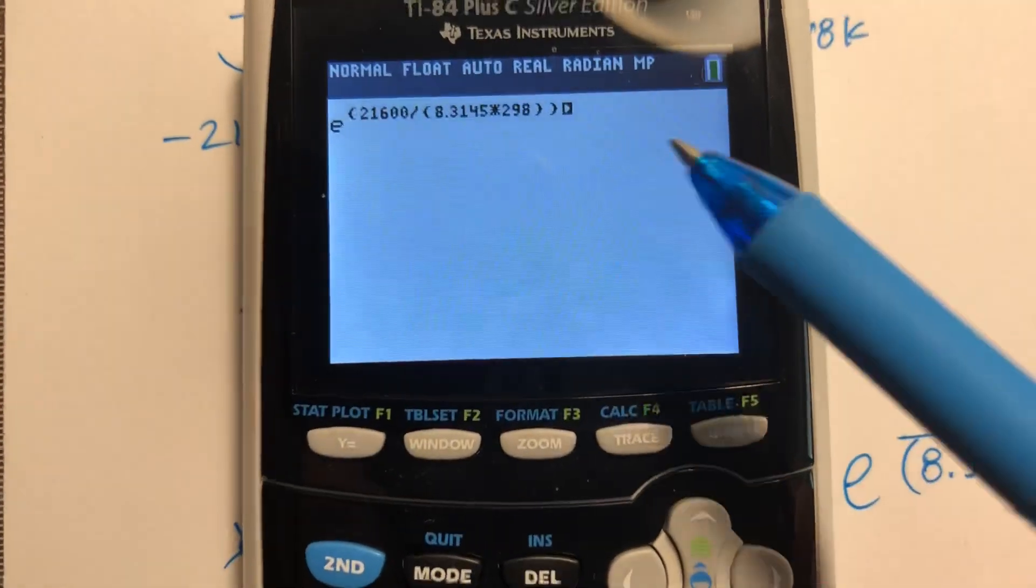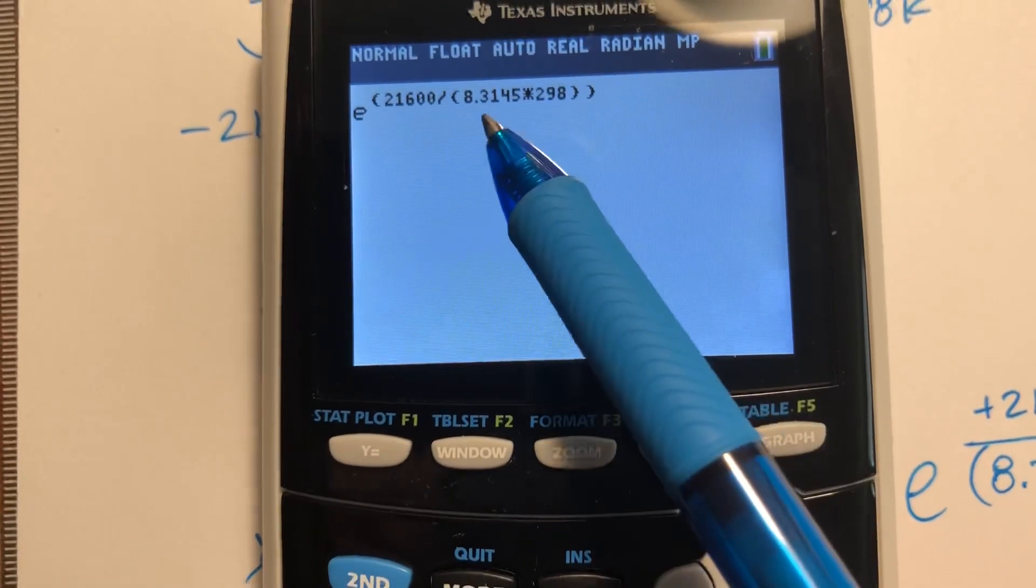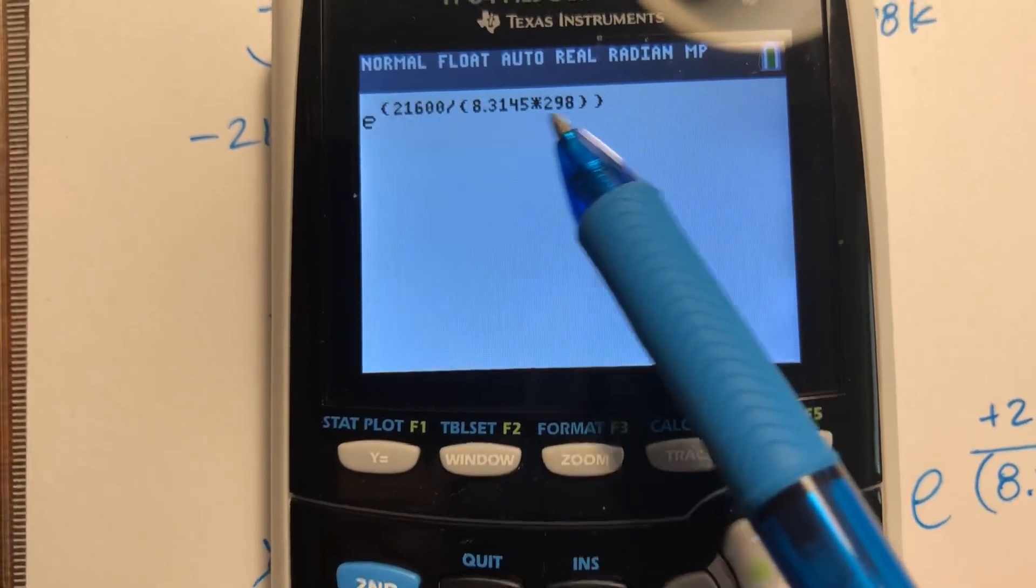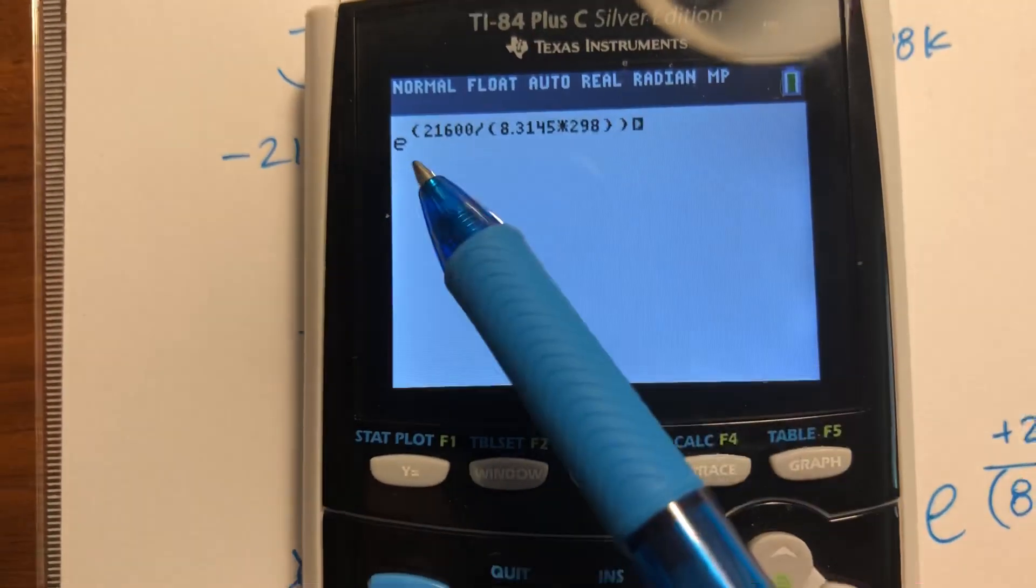So, the way I have written this is this inner set of parentheses ensures that the denominator in our exponent is multiplied, and that this is the numerator, and that all of that is the exponent.